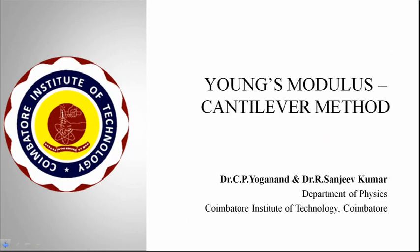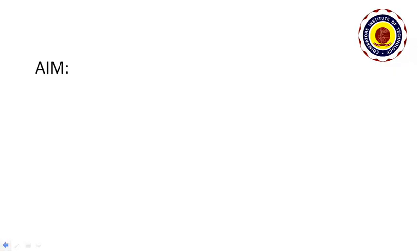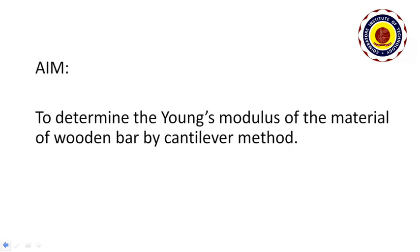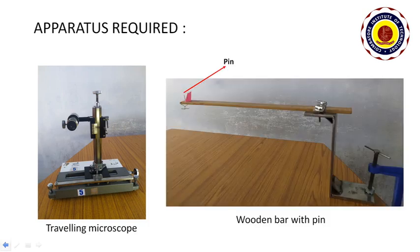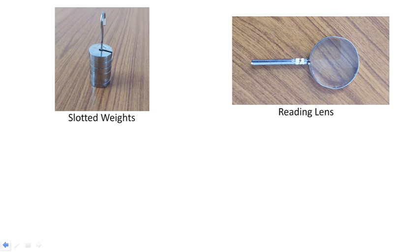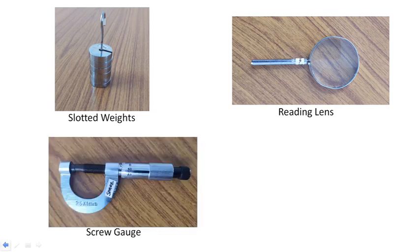Welcome to the lab session on Young's modulus cantilever method. The aim of the experiment is to determine the Young's modulus of the material of the wooden bar by cantilever method. Apparatus required: traveling microscope, wooden bar with pin, slotted weights, reading lens, screw gauge, and vernier calipers.